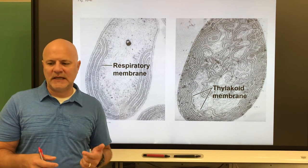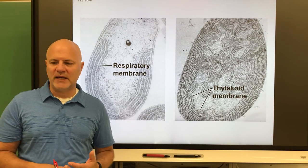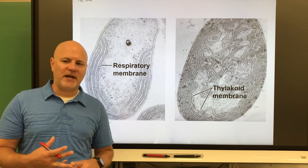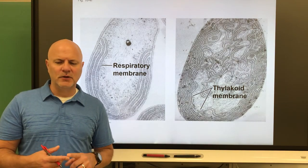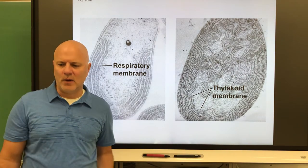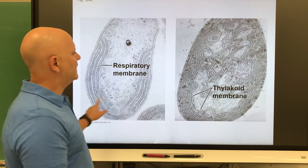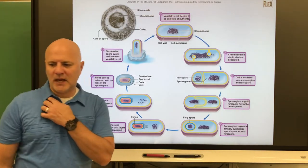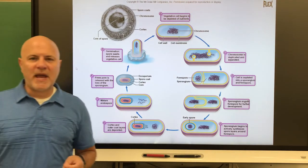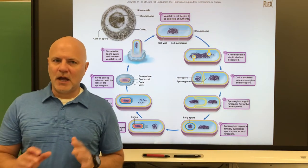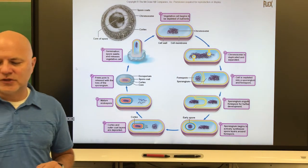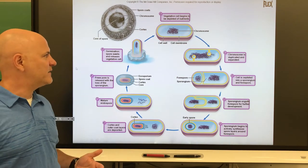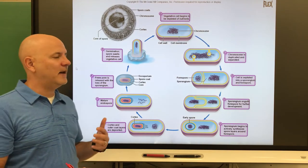Plasmids, endospores, pili, flagella, glycocalyx, and thylakoids are not found in all bacteria. All bacteria have a plasma membrane, cytoplasm, ribosomes, nucleoid, and a cell wall. Now, some bacteria — not all — have a two-phase life cycle: a vegetative cell phase and an endospore phase.